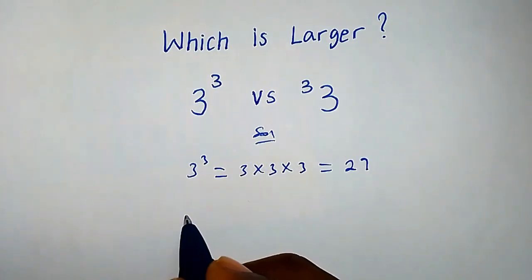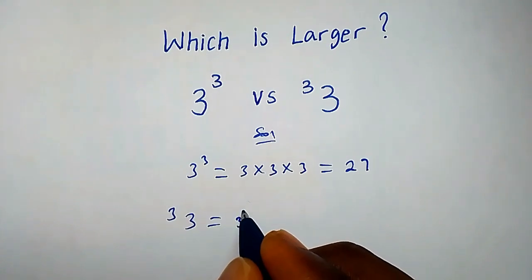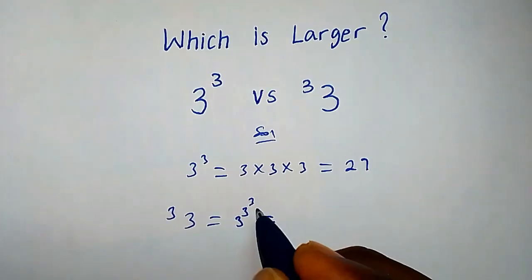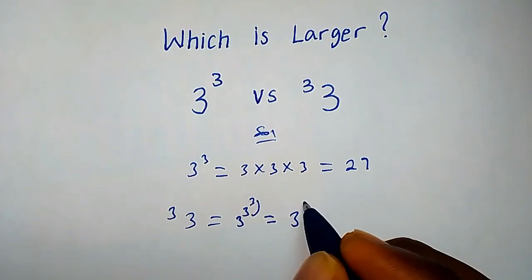Now let's consider this. We have 3 to the super power of 3. This can be interpreted as 3 raised by 3 raised by 3. This equals 3 raised by 3, that is 27, so we're going to have 3 raised by 27.